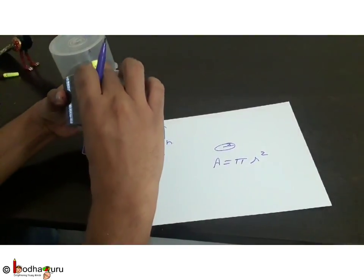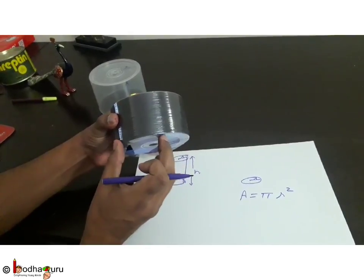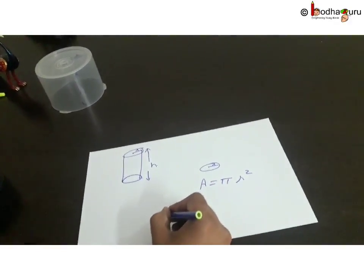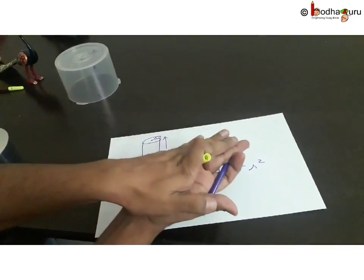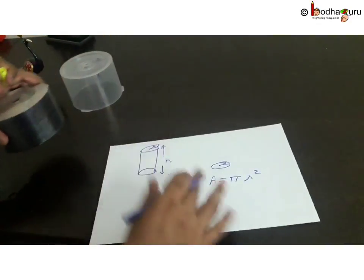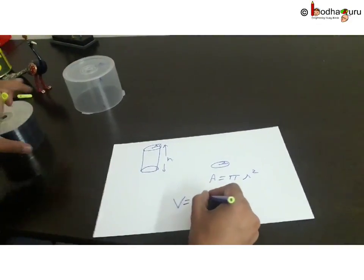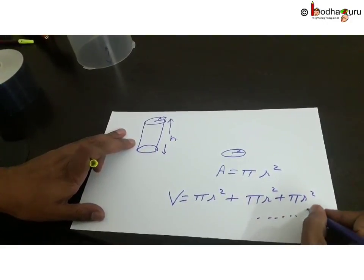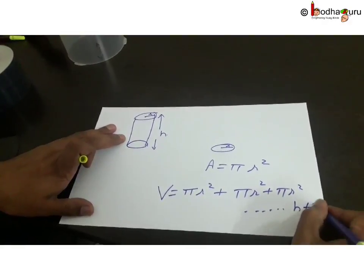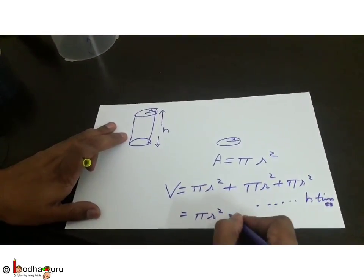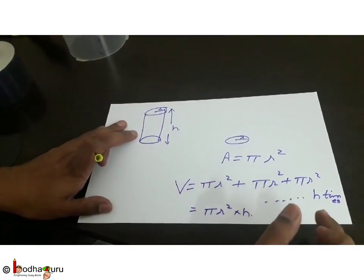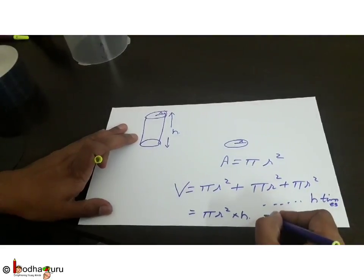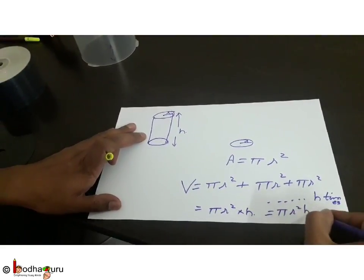Now, how many such DVDs are stacked here? The total volume of this cylinder — if you imagine it as one circle on top of another, on top of another — it will be pi r squared added h times. Since multiplication is repetitive addition, pi r squared added h times equals pi r squared × h, which gives pi r squared h cubic units.